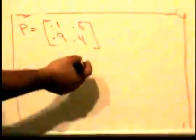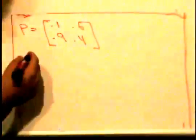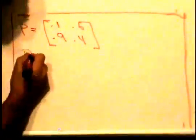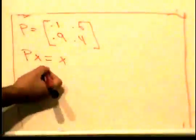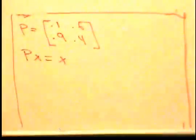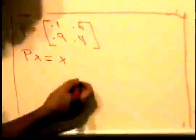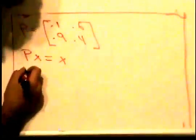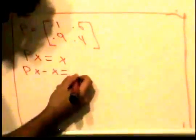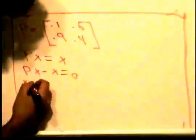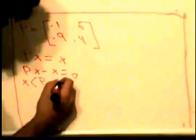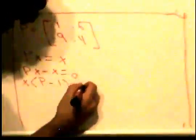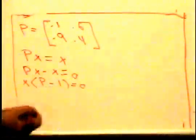First we have to solve the equation Px = x. Earlier I called it q, but I'm using the symbol x now. I'm going to subtract x from both sides to get Px - x = 0. If I factor out an x, I get (P - I)x = 0, where I is the identity matrix.